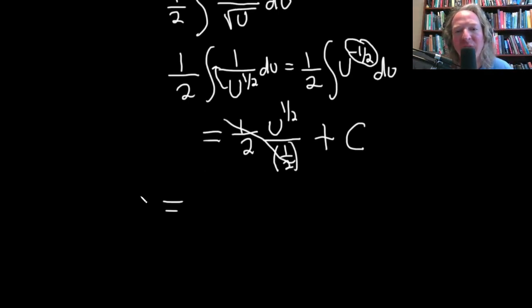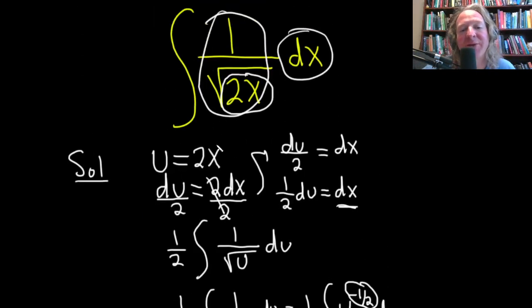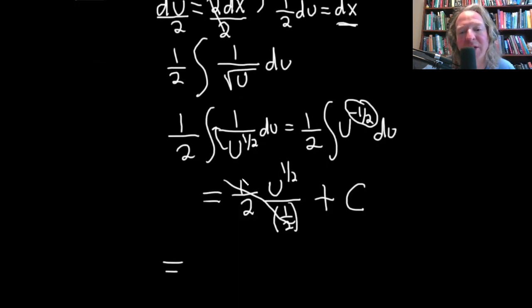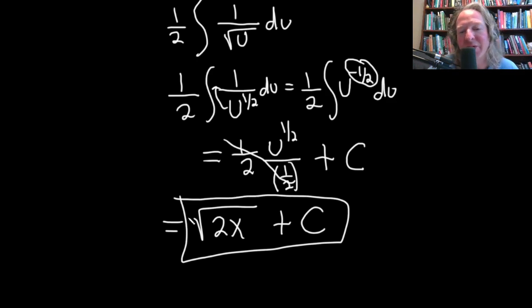But what was u? u was 2x. So we have to go back to the original variable. This will be the square root of 2x plus our constant of integration, capital C. And that would be the answer.